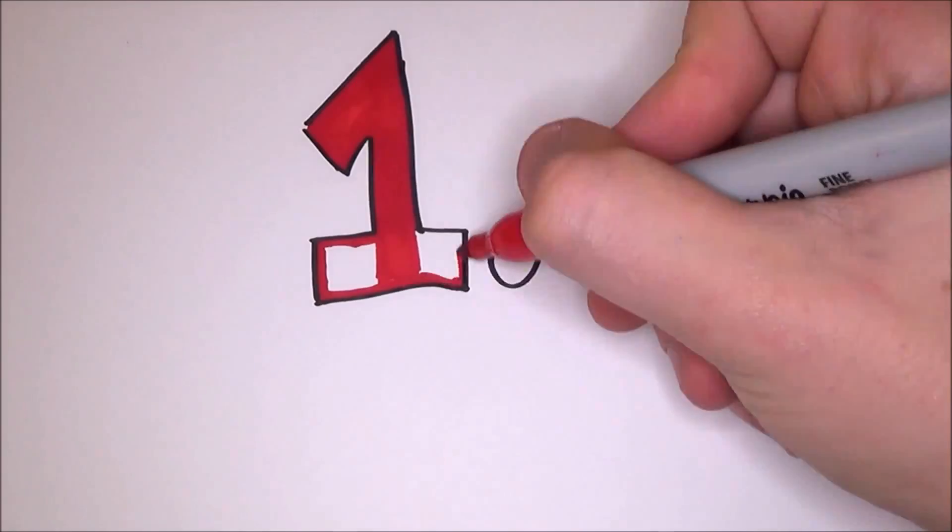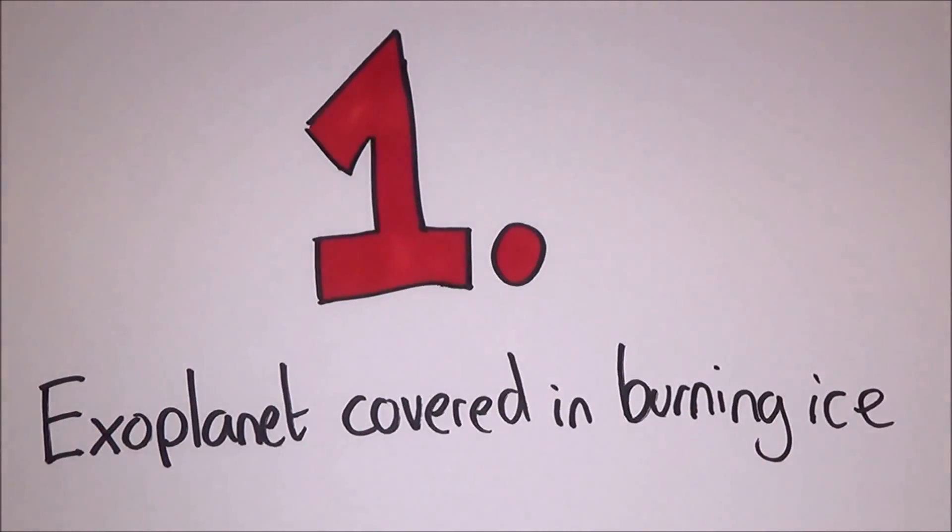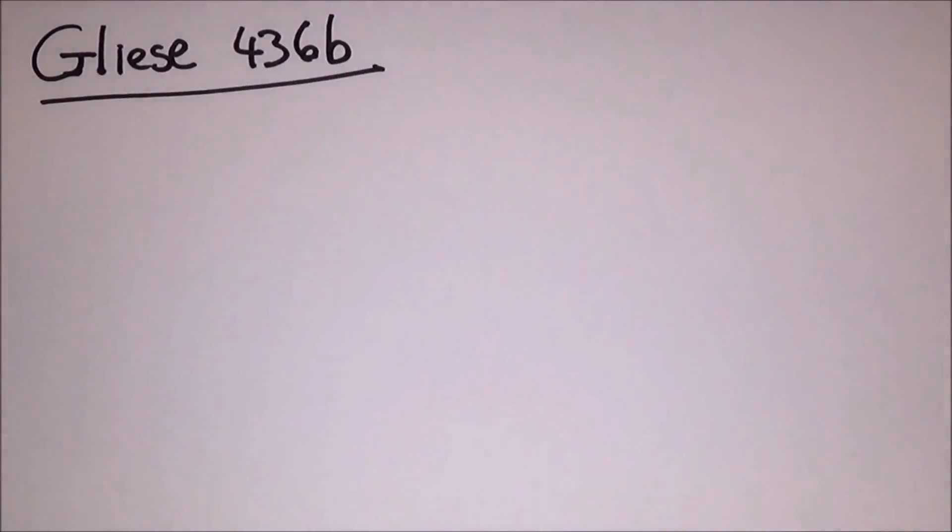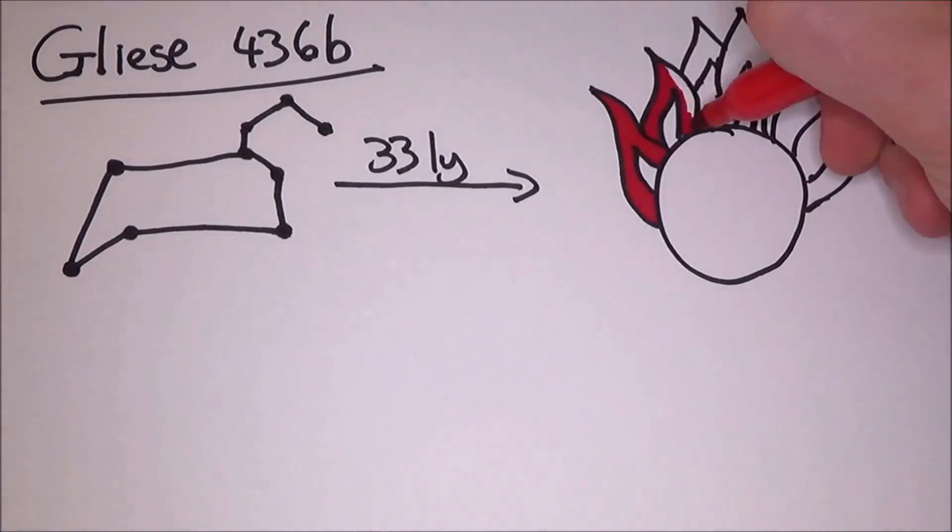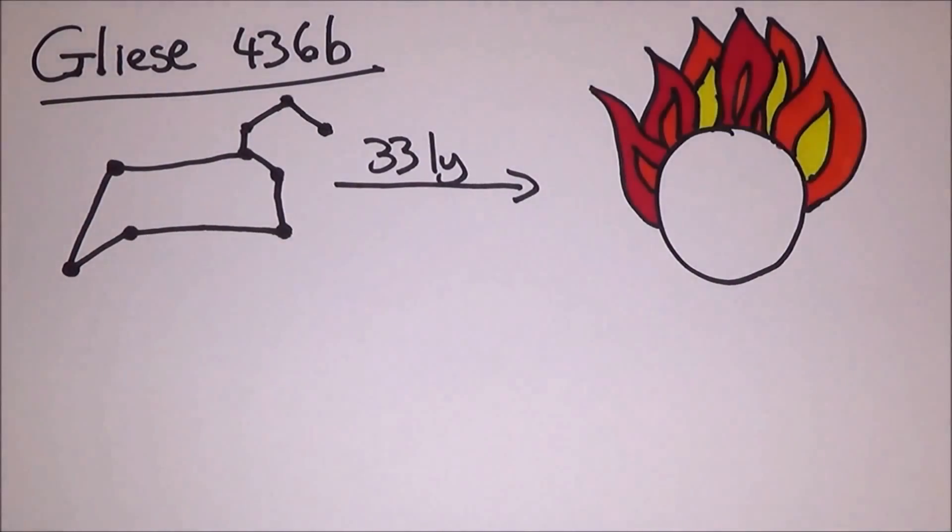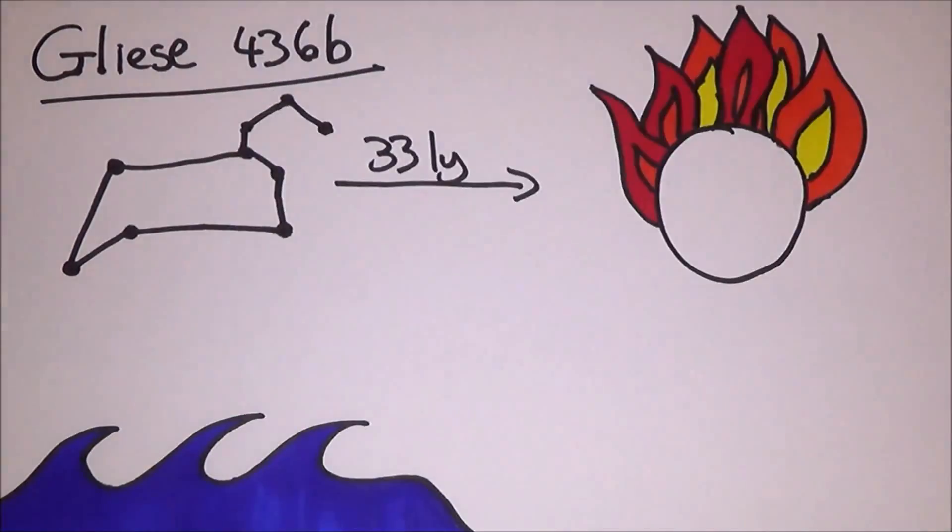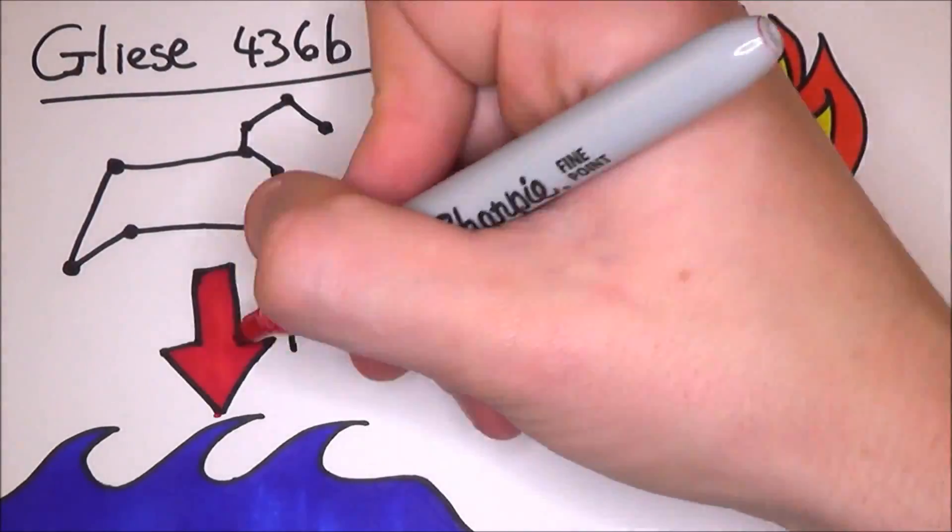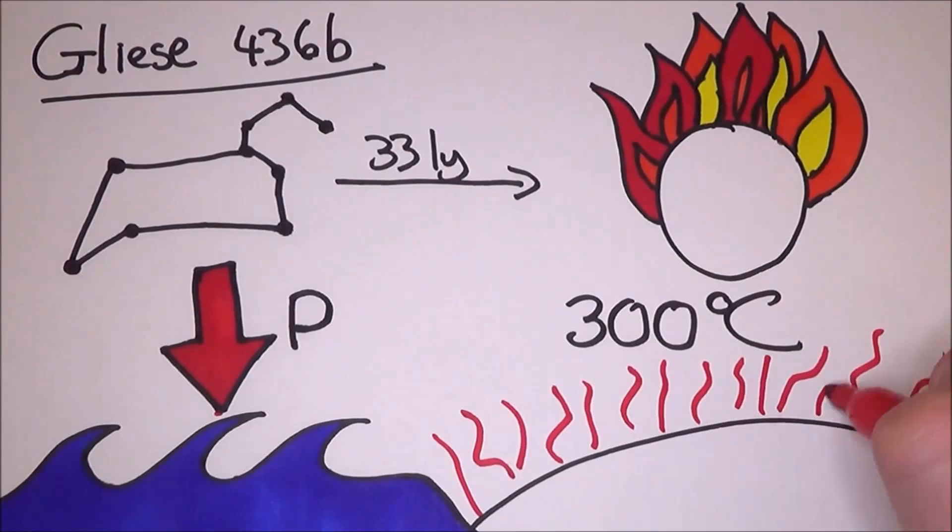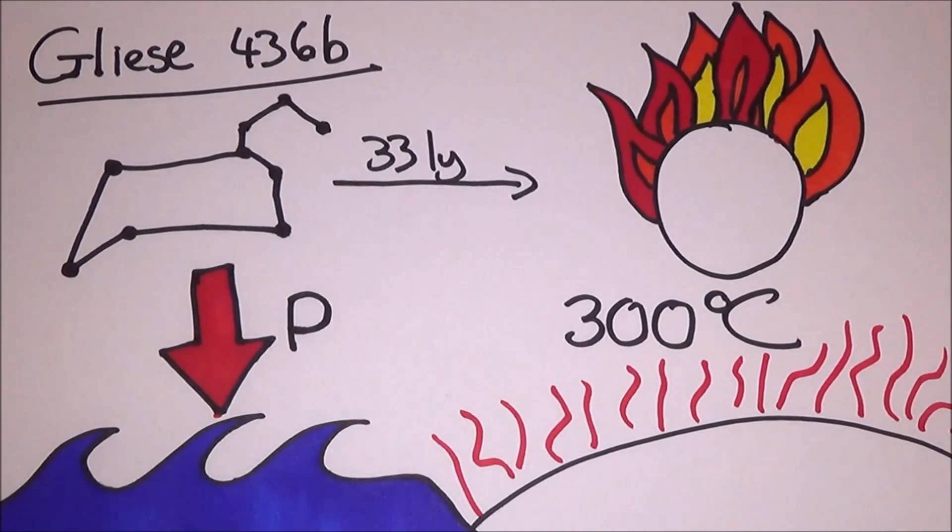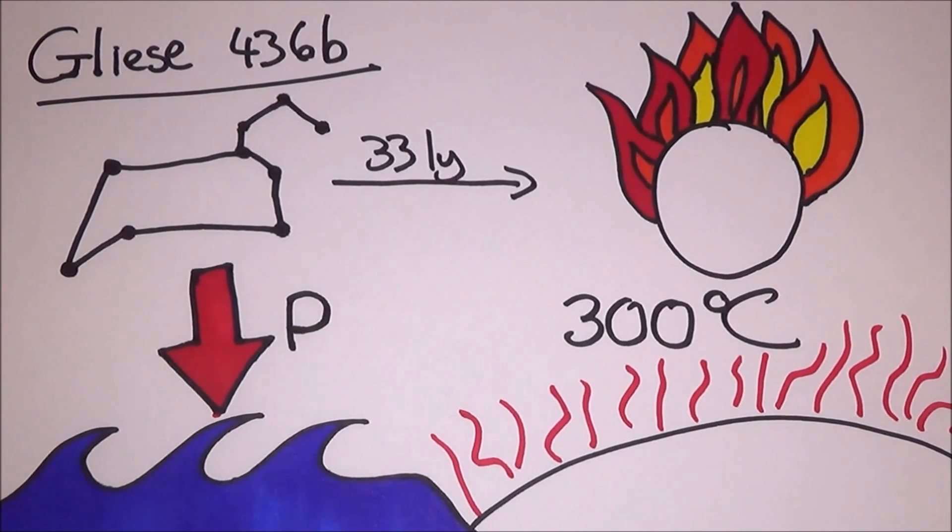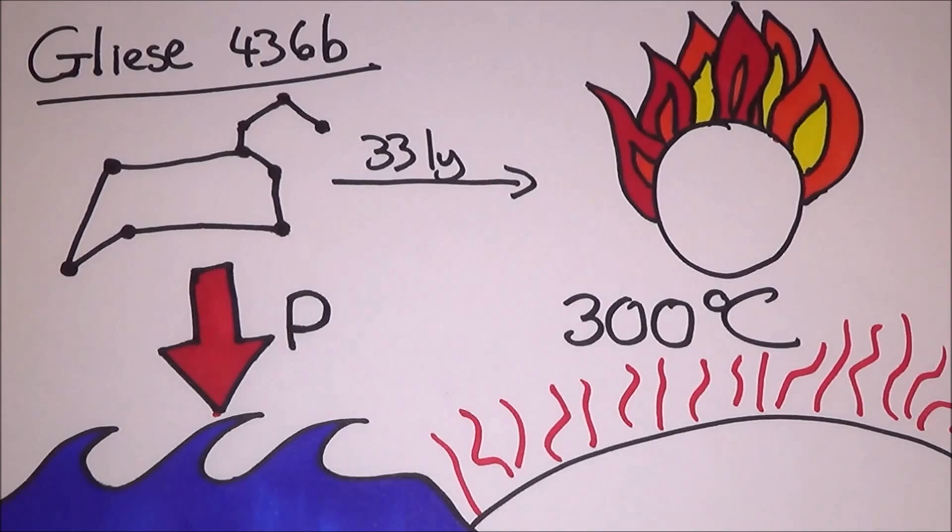Number 1 is definitely an exoplanet that is covered in burning ice. Gliese 436b is a Neptune sized planet that is about 33 light years away from the constellation Leo. Its surface would be covered in water, except the pressure forces the water to turn into ice. But then because the surface temperature is 300 degrees Celsius, it makes it superheated and when the ice melts, it skips the liquid phase completely and goes straight into a gas. So it's not actually on fire, it's just steam.